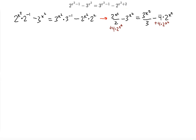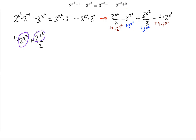Now I want to group all the base-two terms on one side and all the base-three terms on the other side. I'm adding the base-two term from the right side to both sides, and also adding the base-three term to both sides. On one side I want only base-two terms, and on the other side only base-three terms.